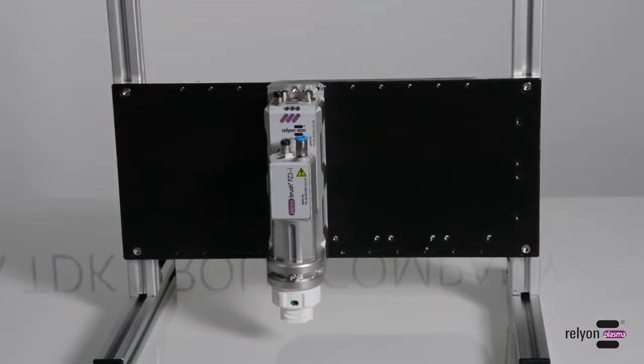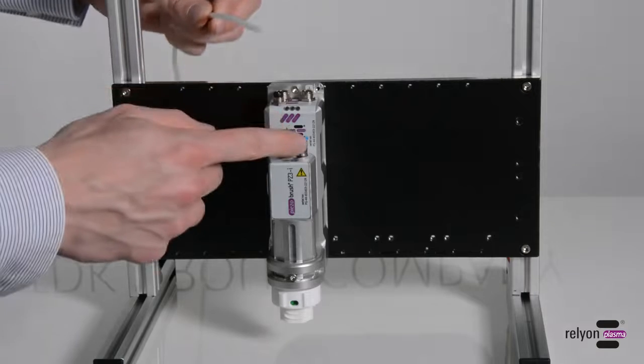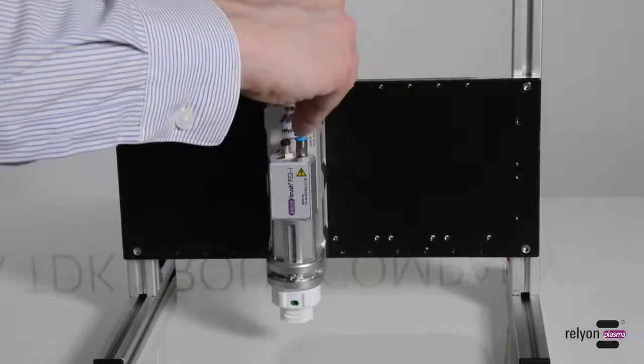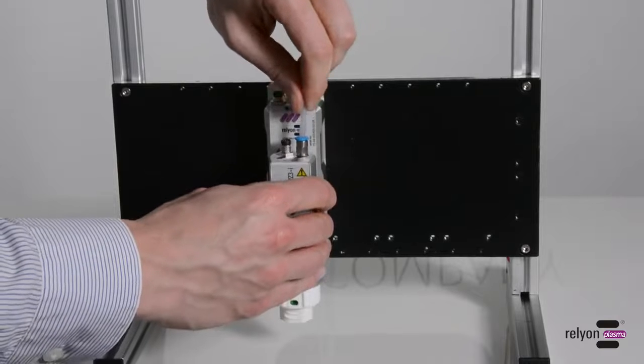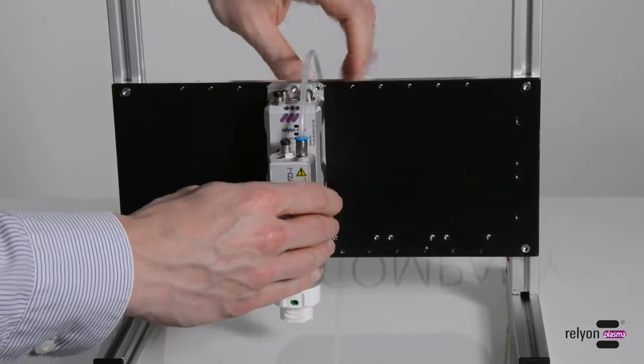Next, the connection lines are mounted. Start with the gas hose with an outer diameter of 4 mm and insert it into the push-in fitting. Please check whether the hose is firmly connected.